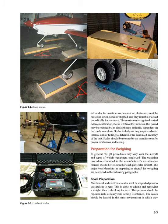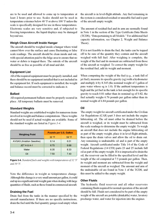Preparation for Weighing: In general, weighing procedures may vary with the aircraft and types of weight equipment employed. The weighing procedure contained in the manufacturer's maintenance manual should be followed for each particular aircraft. Scale Preparation: Mechanical and electronic scales shall be inspected prior to use and set to zero. This is done by adding and removing a weight, then rechecking for zero. This process should be repeated until a steady zero setting is obtained. The scales should be allowed to come up to temperature at least two hours prior to use. Scales should not be used in temperature extremes below 40°F or above 100°F unless specifically designed for those temperatures. Electronic scales are very sensitive and, if subjected to freezing temperatures, the liquid displays may be damaged beyond use.